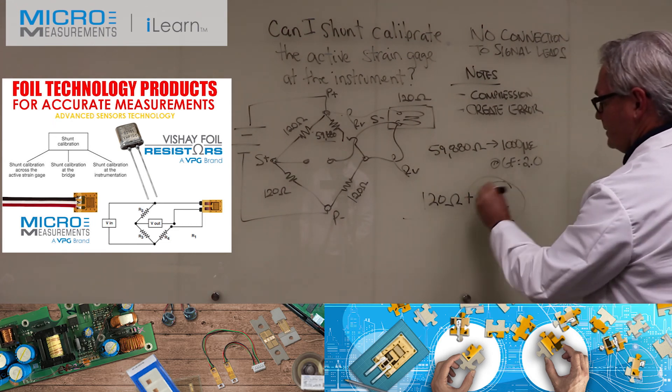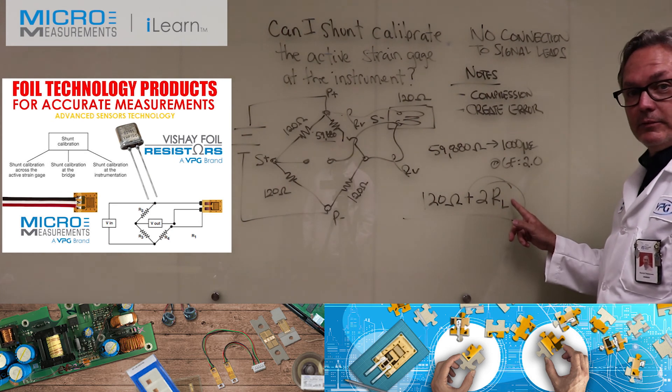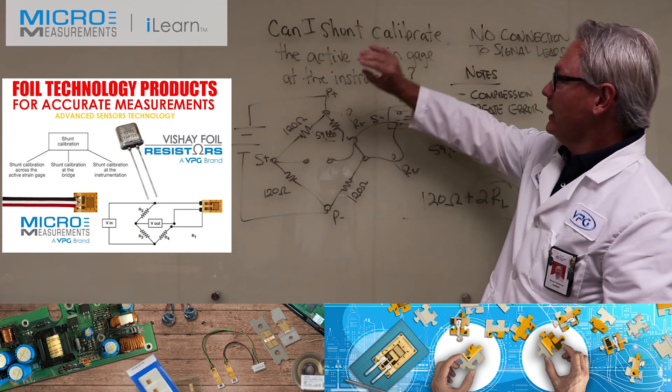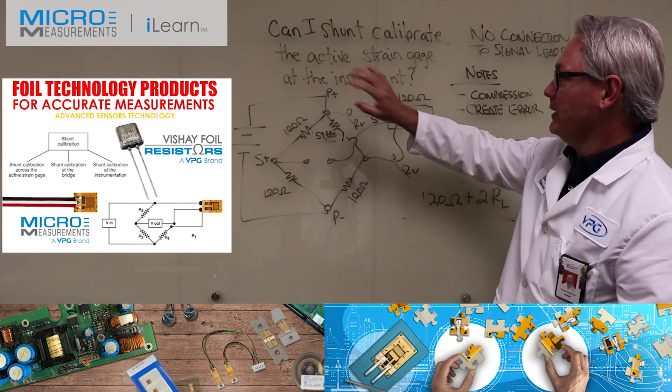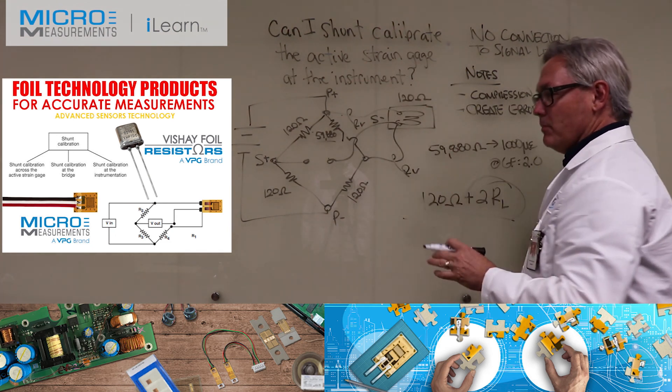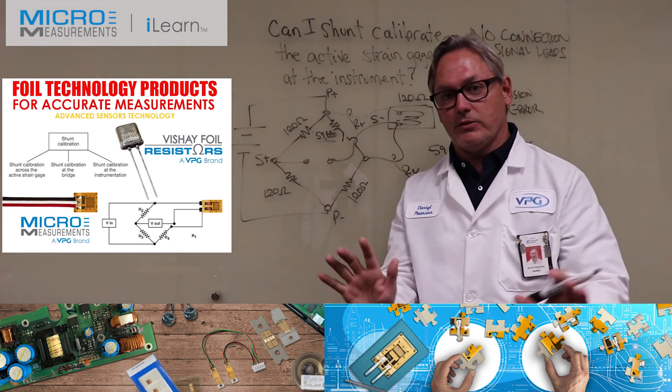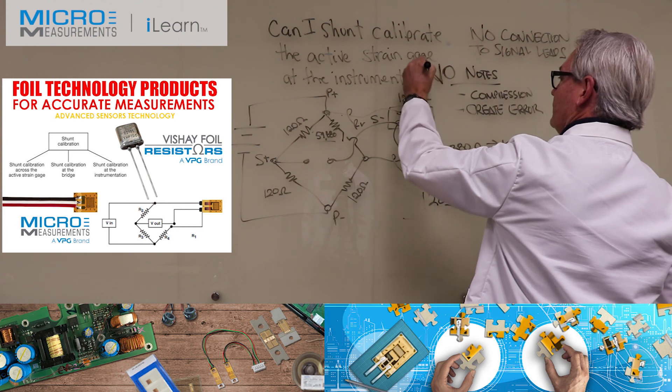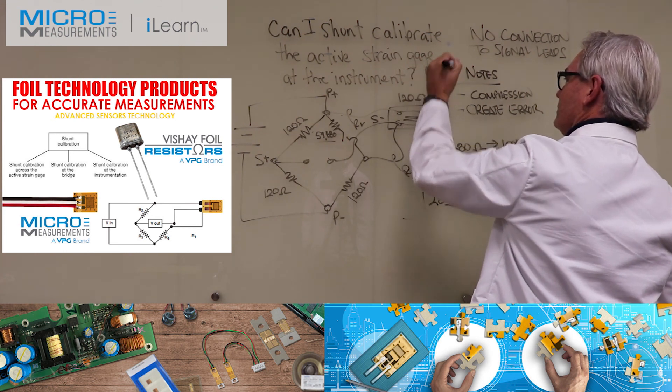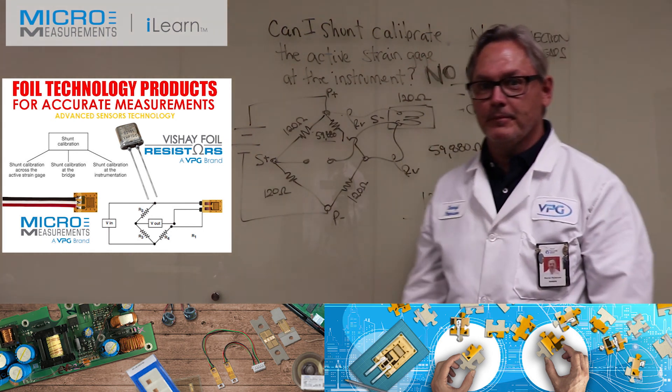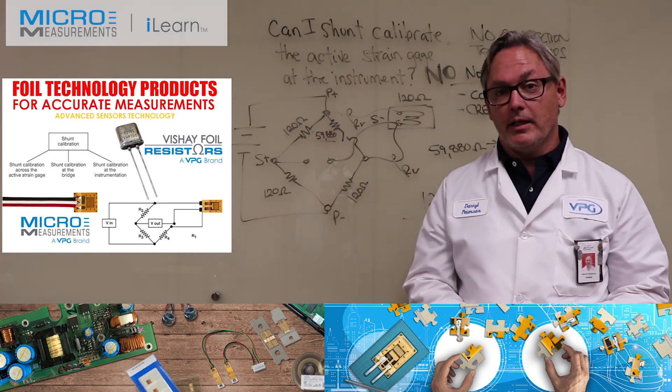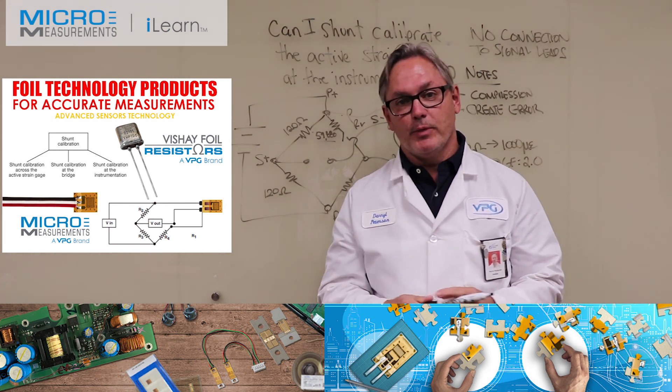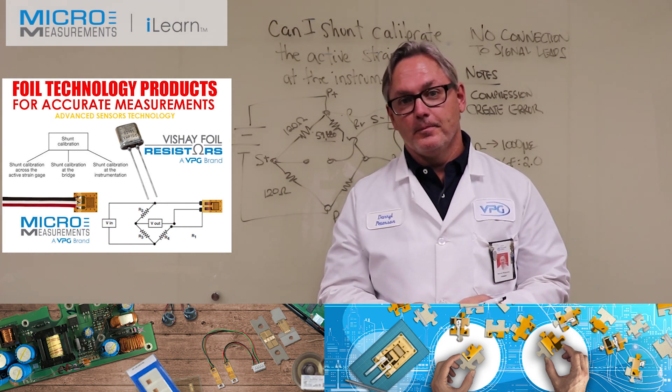This will vary greatly depending on your application. So to go back to the original question: can I shunt calibrate the active strain gauge at the instrument? For most applications and customers I would say no - there are better places to calibrate, don't do it there. If you'd like to find out more about shunt calibration, please visit our website at www.micro-measurements.com. Thank you.